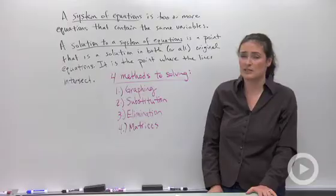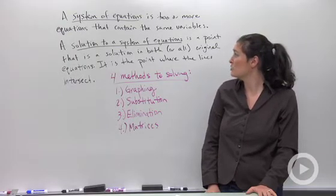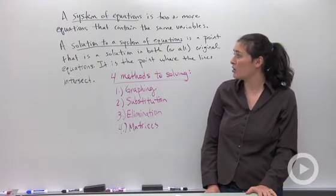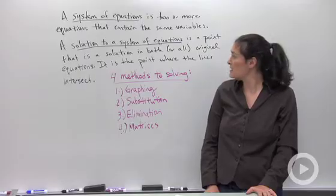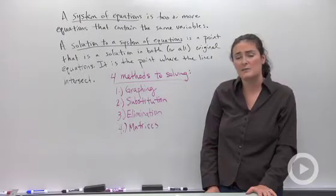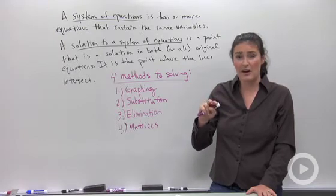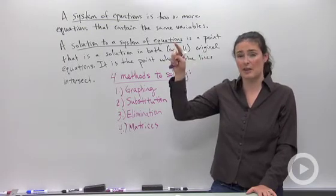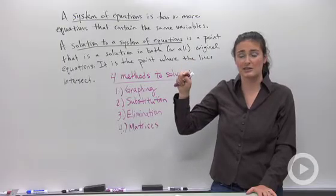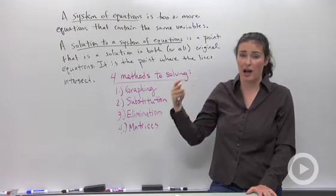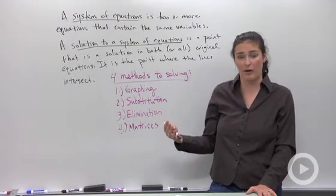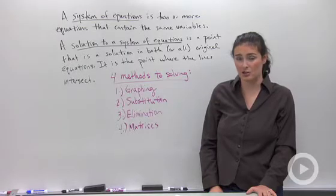The solution to a system of equations is the solution in both or all original equations. It's the point where the lines intersect. What that means is that if I take my x and y pair that I think is the solution, and I substitute them into both original equations, both original equations will come out true. They'll come out as equalities. That's how I'll know if my work is correct.